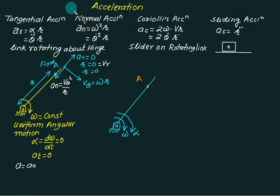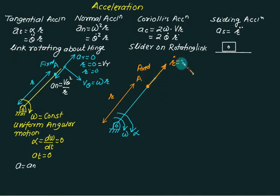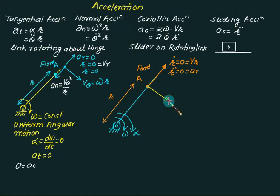Now consider the same link but this time with angular acceleration equal to alpha, and radial distance of point A equal to r. This time we have two accelerations: one is normal acceleration, and the other is the convective acceleration called tangential acceleration. The point is fixed, therefore r-dot is zero, v_r is also zero, and r-double-dot is zero. So there is no radial acceleration outward.